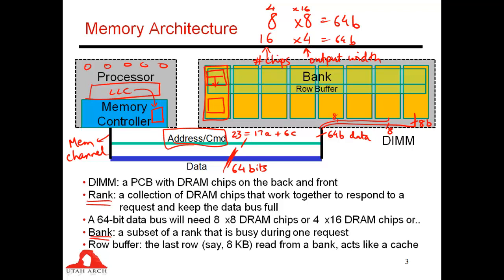So while that bank is busy, I want the memory controller to be able to issue requests to other parts of the memory system as well. So while that one bank is busy, I can also issue a request to this other bank, and say that while the first one is busy reading data out, you can also read out a different row of data into your own row buffer.